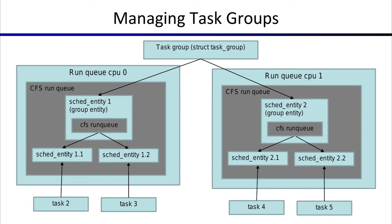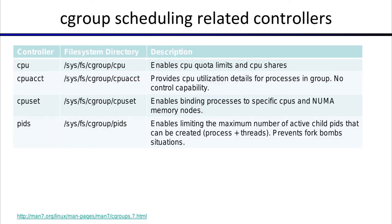There are other cgroup controllers, but since we are discussing scheduling, we will cover four: CPU, cpuacct, cpuset, and PID. PID is included because it affects scheduling by rejecting or accepting new process creation.